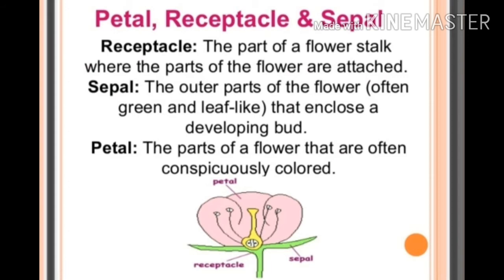Petals are the colorful parts of the flower — the parts that are often conspicuously colored. That colored part is called petals. Petals give an attractive color to the flower, and this colored structure helps in pollination of the flower.